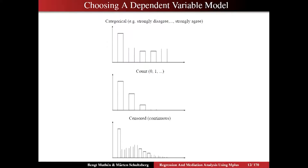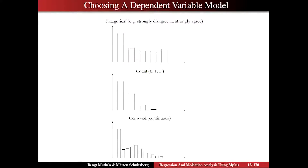At the top here, we have five bars — a typical Likert scale, from strongly disagree to strongly agree. What the categorical variable model tries to describe is the probability of being in each of these histogram bars. In this case, the categorical variable is clearly ordinal.